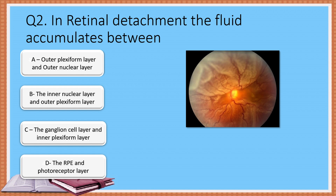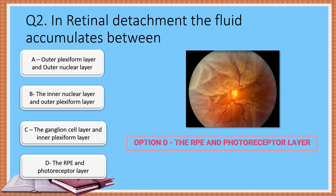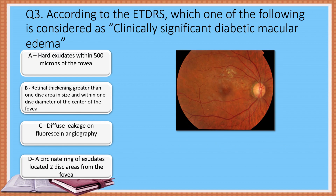The correct answer is Option D: the retinal pigment epithelium and photoreceptor layer. Adhesion of these layers is maintained by a variety of mechanisms. Due to various causes, there can be collection of subretinal fluid. They are classified as rhegmatogenous retinal detachment, tractional, and exudative retinal detachments.